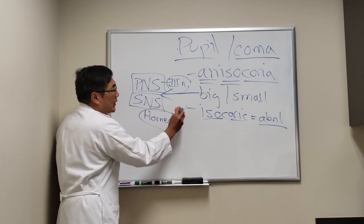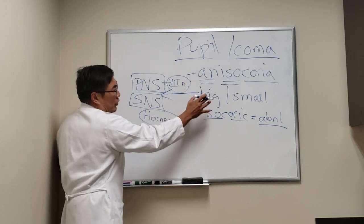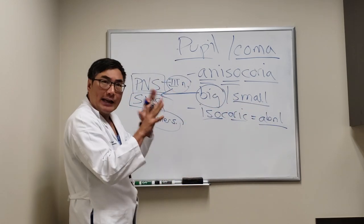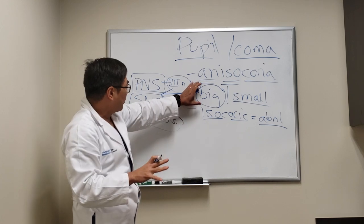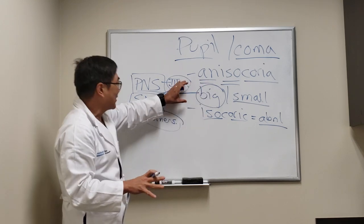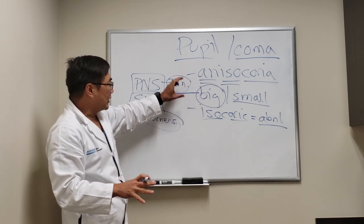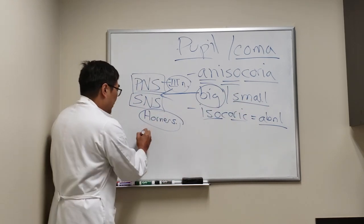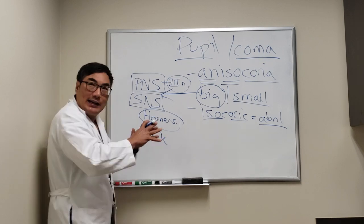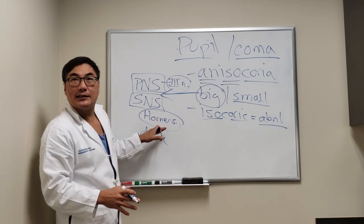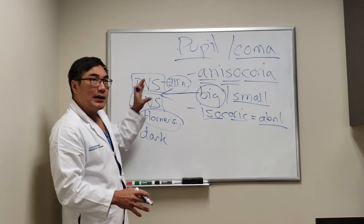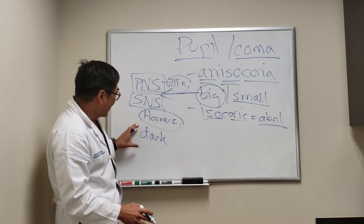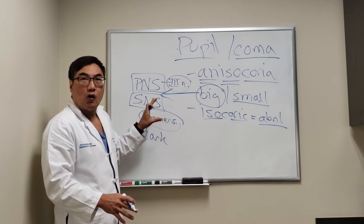One of the first things we do in anisocoria is determine: am I dealing with a big pupil problem or a small pupil problem? We test the light reaction — if it's poor and doesn't constrict, that's the bad pupil. If the light reaction is good in both eyes and the anisocoria is greater in the dark, that means it's not dilating properly, which is a sympathetic lesion. So a dilation problem in the dark with a normal light reaction — anisocoria greater in the dark — that's Horner syndrome.